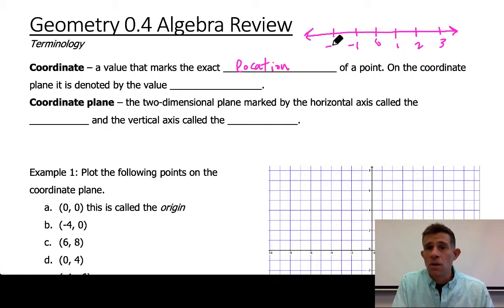If I move to the left of zero, I'd have negative 1, negative 2, negative 3, off to negative infinity or positive infinity. Now there's infinitely many points on a number line and each one of those points is marked by a coordinate. A coordinate is simply a value or a number that marks that exact location.